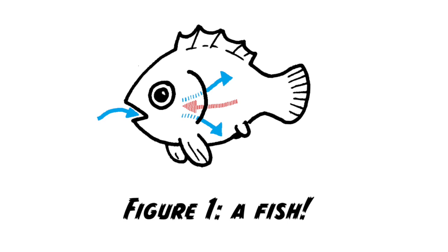Let's start by considering the fish. The fish, like every other animal, needs to have oxygen as that final electron acceptor at the end of the electron transport chain, which means they need oxygen to survive and to breathe. Unfortunately, they live in an aquatic environment and there's not as much oxygen dissolved in water as there is in air. So they've got a particular set of challenges.